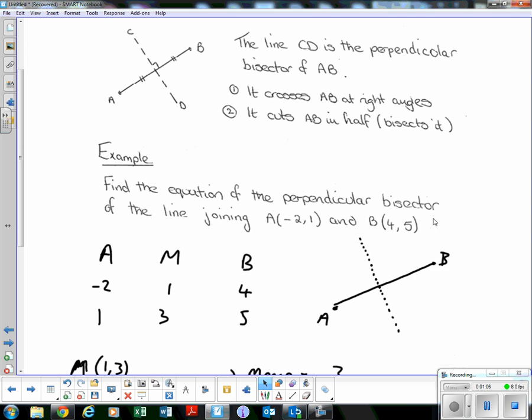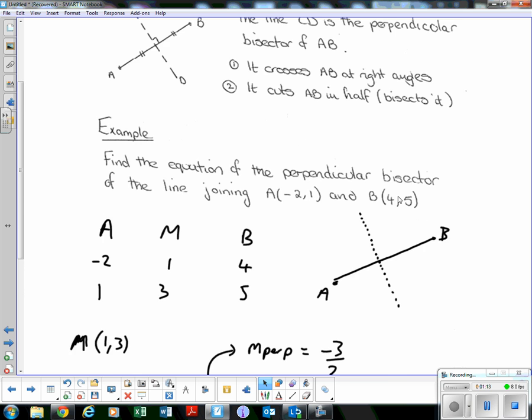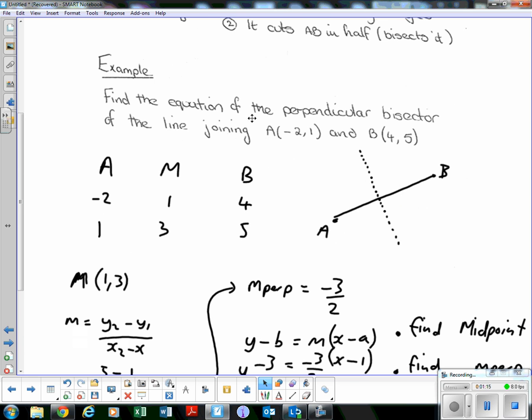So let's have a look at how we're going to find out the equation of a perpendicular bisector, which is just a straight line. So we're just going to do y minus b equals mx minus a. Find the equation of the perpendicular bisector of the line joining A(-2, 1) and B(4, 5). Draw a quick sketch. So here's A, here's B. The perpendicular bisector cuts AB in half, so I want to know where this point is. And I'm going to call this point the midpoint.